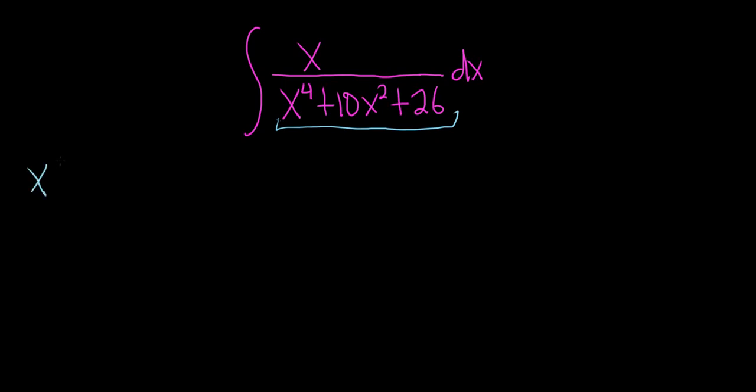So let's try it. So we have x to the fourth plus 10x squared plus 26. And so maybe we can complete the square here. So this is x to the fourth plus 10x squared.